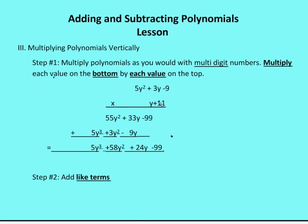I start with 11 and multiply it through the top polynomial. So I have 11 times negative 9 is negative 99, 11 times 3y gives me 33y, and 11 times 5y squared gives me 55y squared. When multiplying a constant, you multiply the coefficients times the constant and leave the variable as it is. Then for the variable term: y times negative 9 gives negative 9y, y times 3y gives plus 3y squared, and y times 5y squared gives 5y cubed.